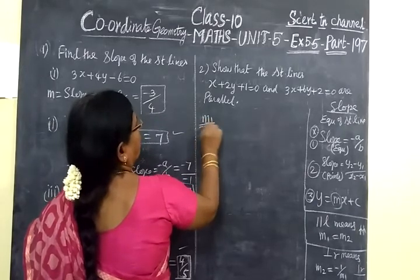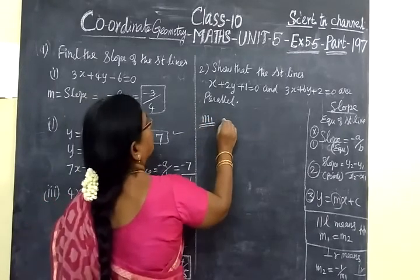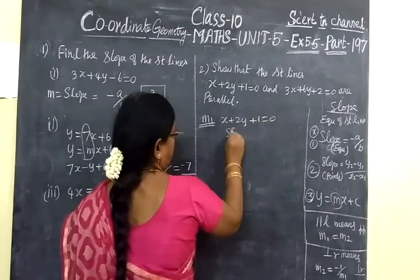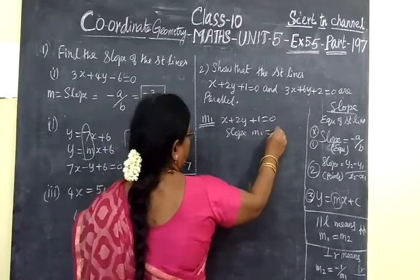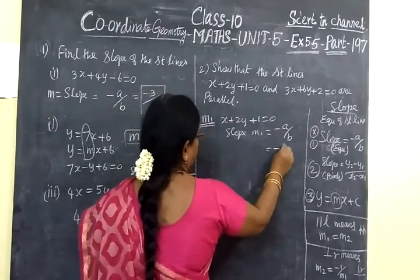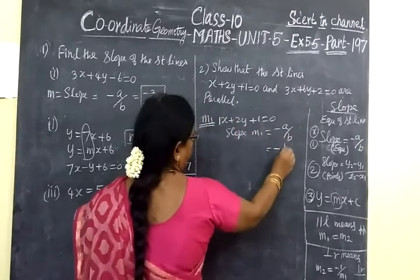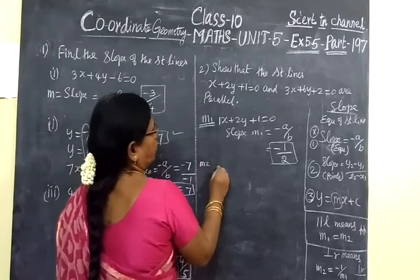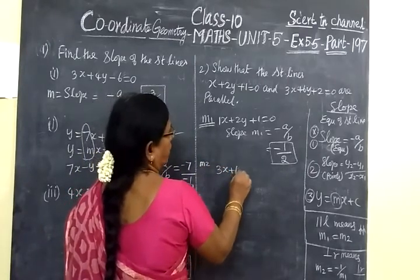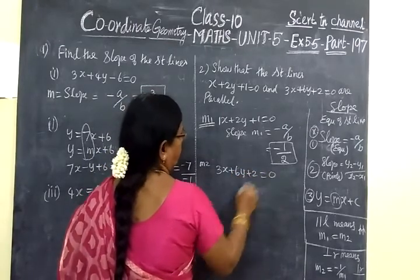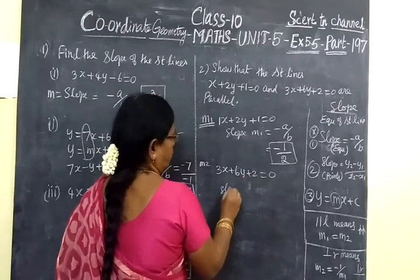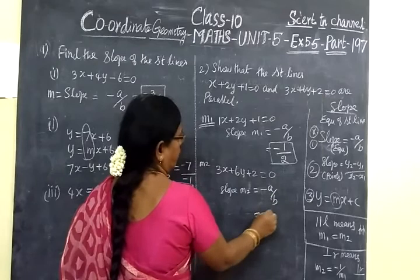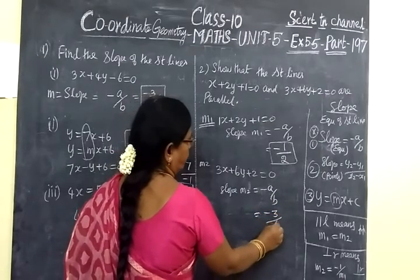Now first you are finding M1. So x plus 2y plus 1 equals 0. Slope m1 equals minus a by b. So minus a value 1 by b value 2. Now you find m2. You take the second equation: 3x plus 6y plus 2 equals 0. So second slope m2 equals minus a by b. Minus a value 3, b value 6.